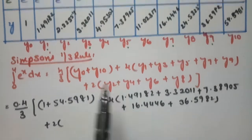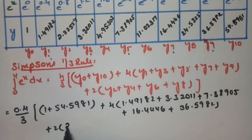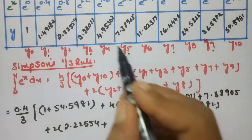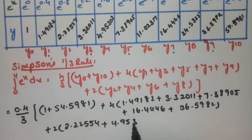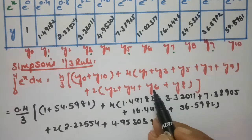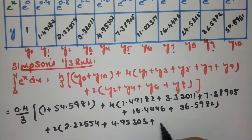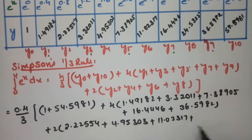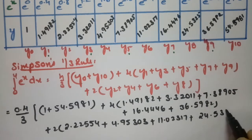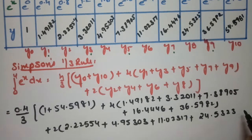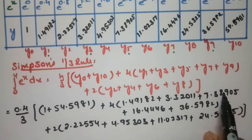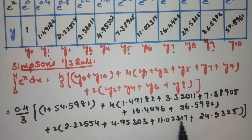Plus 2 times the even values: y2=2.22554, y4=4.95303, y6=11.02317, and y8=24.5325. That completes the substitution of all 11 ordinates into the Simpson's 1/3 rule formula.